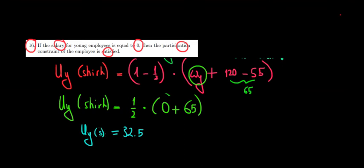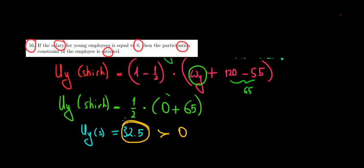Now, 32.5 is better than nothing — better than 0 — because the alternative of not even trying to shirk would be doing nothing: no wage, no cost, so that would be 0. This is better. In other words, this is enough to give the young person the incentive to at least do the bare minimum and try to shirk. So the participation constraint is satisfied. The answer is true.